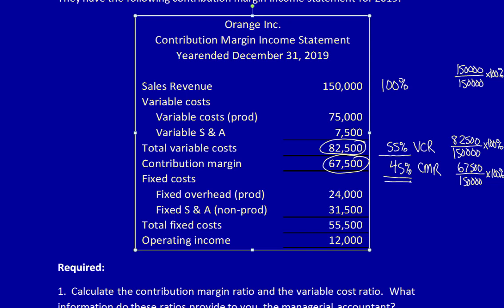100% minus 55% is equal to 45%. That means that if I gave you even one of these—the Variable Cost Ratio or the Contribution Margin Ratio—you should be able to calculate the other ones.